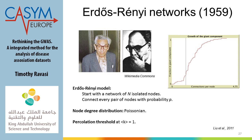Another thing they introduced that's very important for real networks is the percolation score. In a random network, the percolation score is the fraction of the giant component you can form as the network grows from the number of interactions. You can see there is a threshold where, plotted against connections per node, you start to form a giant component. This is important for the predictions I'll show you later.